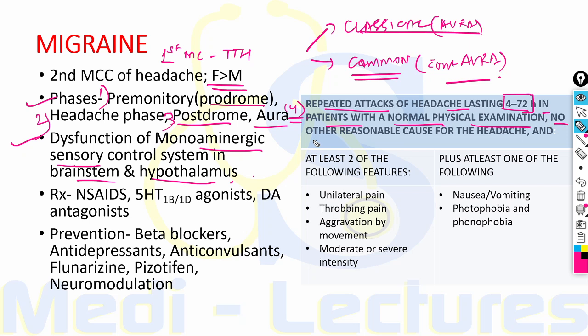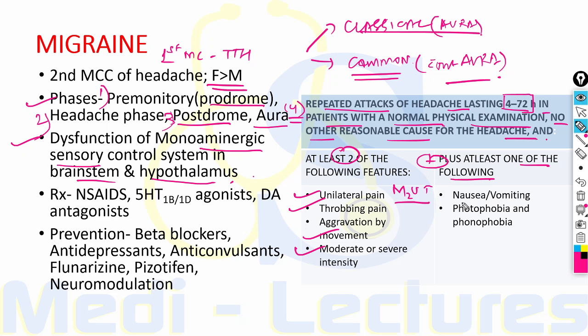At least two of the following features — remembered as M2UT — should be present: Moderate to severe intensity, aggravation by Movement, Unilateral pain which is Throbbing. Plus at least one of the two: either nausea or vomiting, or photophobia and phonophobia. This is the diagnostic criteria for migraine.